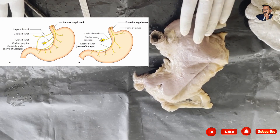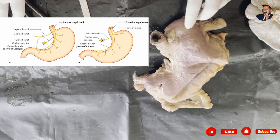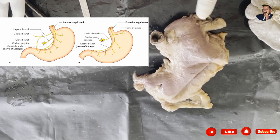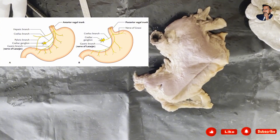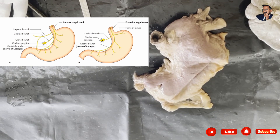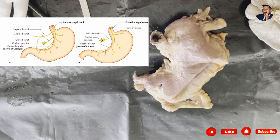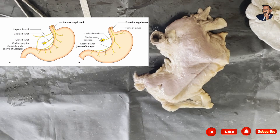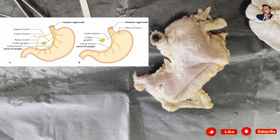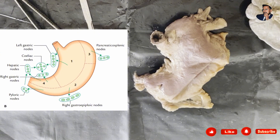Nerve supply is both sympathetic and parasympathetic. The sympathetic is derived from the T6 to T10 spinal segments through the greater splanchnic nerve, celiac, and hepatic plexus. The sympathetic is vasomotor, motor to the pyloric sphincter, inhibitory to the remaining gastric musculature, and is the main nerve for pain sensation from the stomach. The parasympathetic innervation is via the right and left vagus nerves.